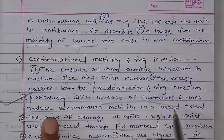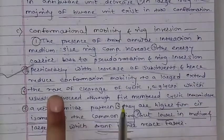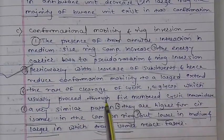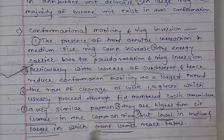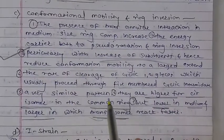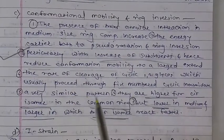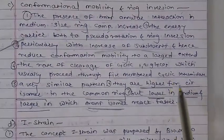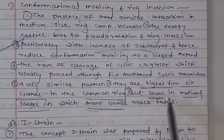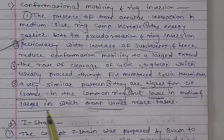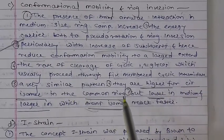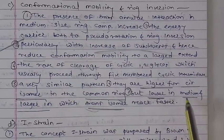Third point: increase in ring size reduces the number of conformations to a large extent. Next point: most often cyclic compounds involve a 5-member ring intermediate as an auxiliary process. The rate is higher for the cycloalkane than the common ring but lower for the medium ring. In the trans isomer, the reaction proceeds faster.